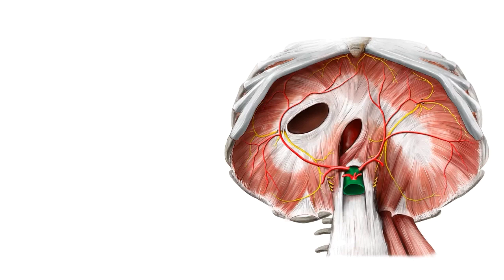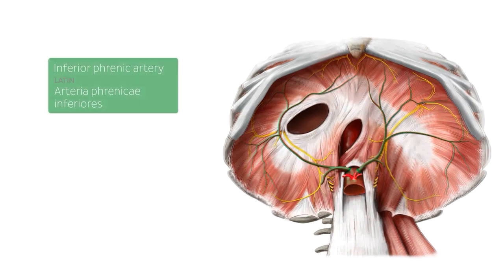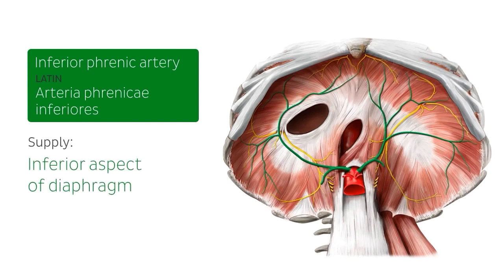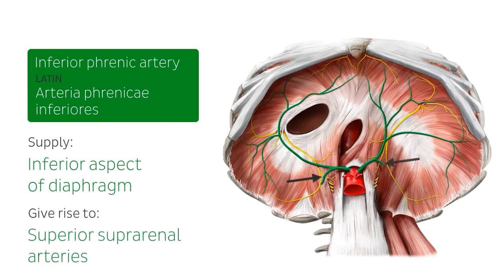In this image, we can see the inferior aspect of the diaphragm. If we were lying at the model's feet and looking up towards the head, we would see this view — our right is on the left here, and our left is on the right. We're looking at this view to see the abdominal aorta, in green, as it emerges from the aortic hiatus of the diaphragm. This also shows us the abdominal aorta's first branches: the left and right inferior phrenic arteries, which supply the inferior aspect of the diaphragm. They also give rise to the left and right superior suprarenal arteries that supply the superior aspect of the suprarenal gland, also known as the adrenal gland.